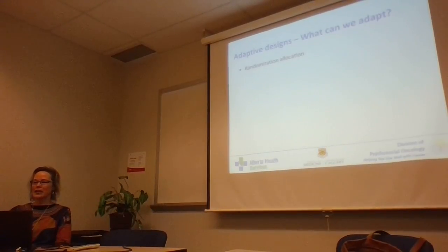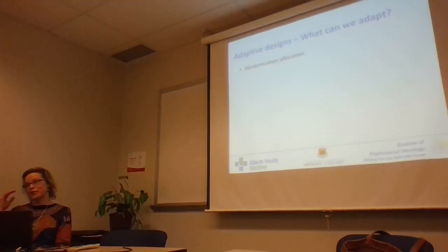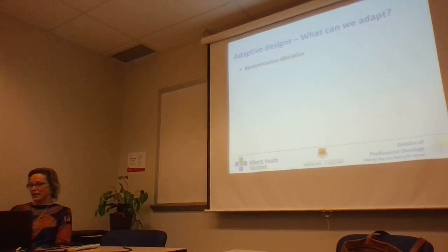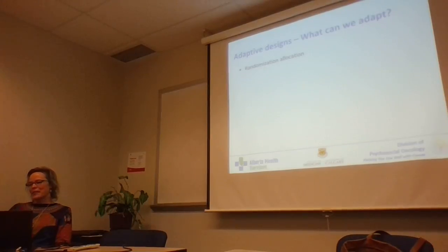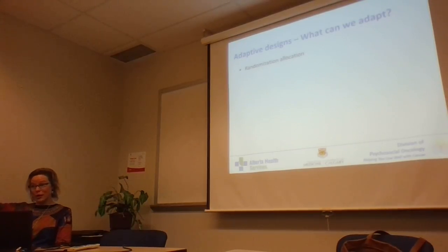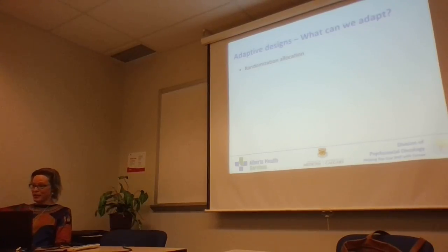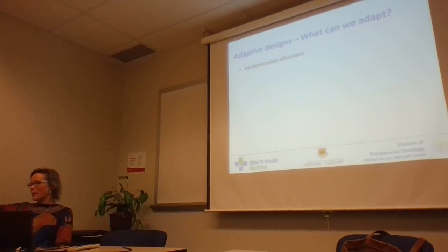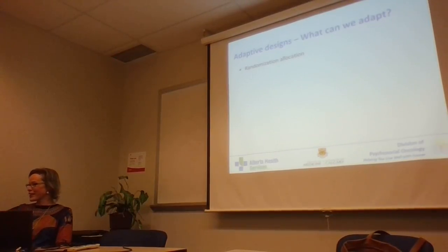For example, at the beginning we might plan stratified randomization on gender — wanting equal numbers of women and men in each group. But there could be other things discovered part-way through that are affecting treatment outcome and should be balanced among groups. The point of randomization in the first place is to balance all the things you can think of, and even those you can't think of. The question is whether these trials are large enough that those things are already balanced — and maybe they are.